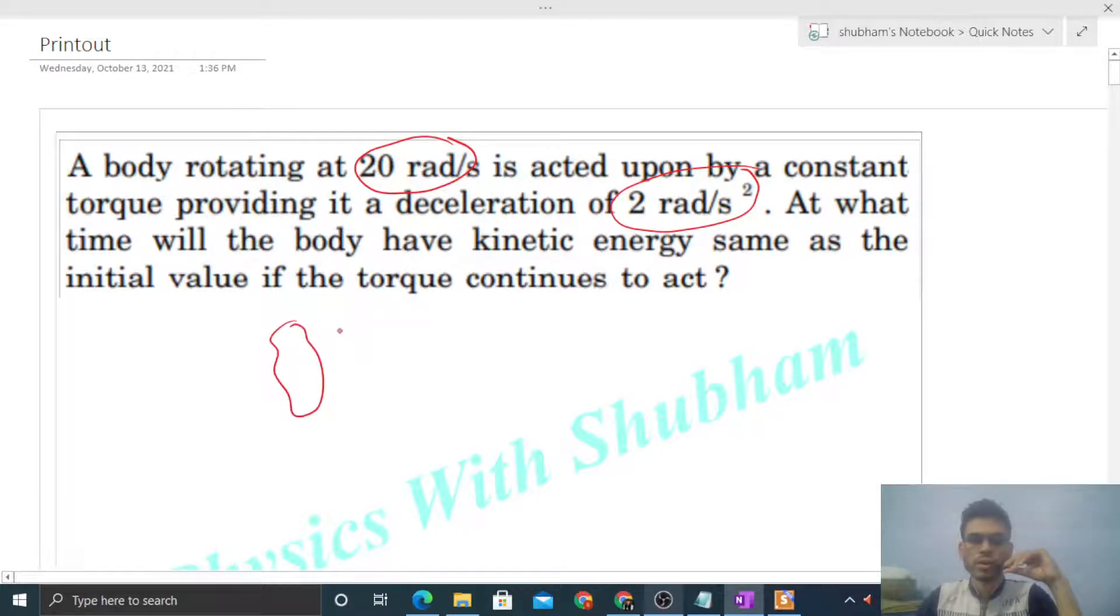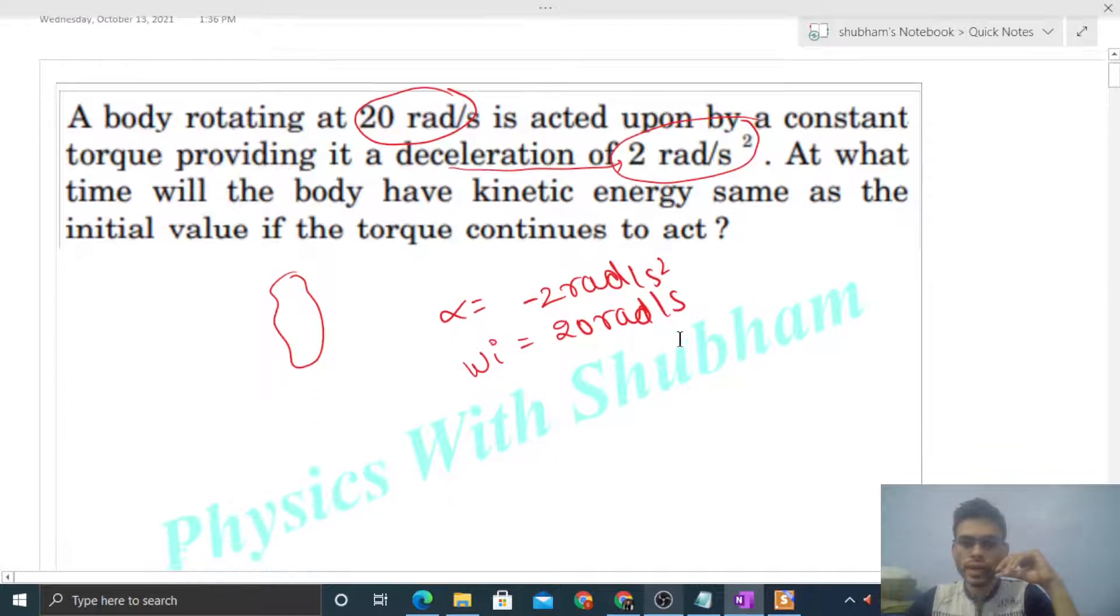So we have a body and a constant torque is acting on it, so its angular acceleration is minus 2 radian per second square, right? The deceleration value, you have to give it a negative sign, so acceleration will be minus 2 radian per second square. Initial angular velocity is also given, that is 20 radian per second.